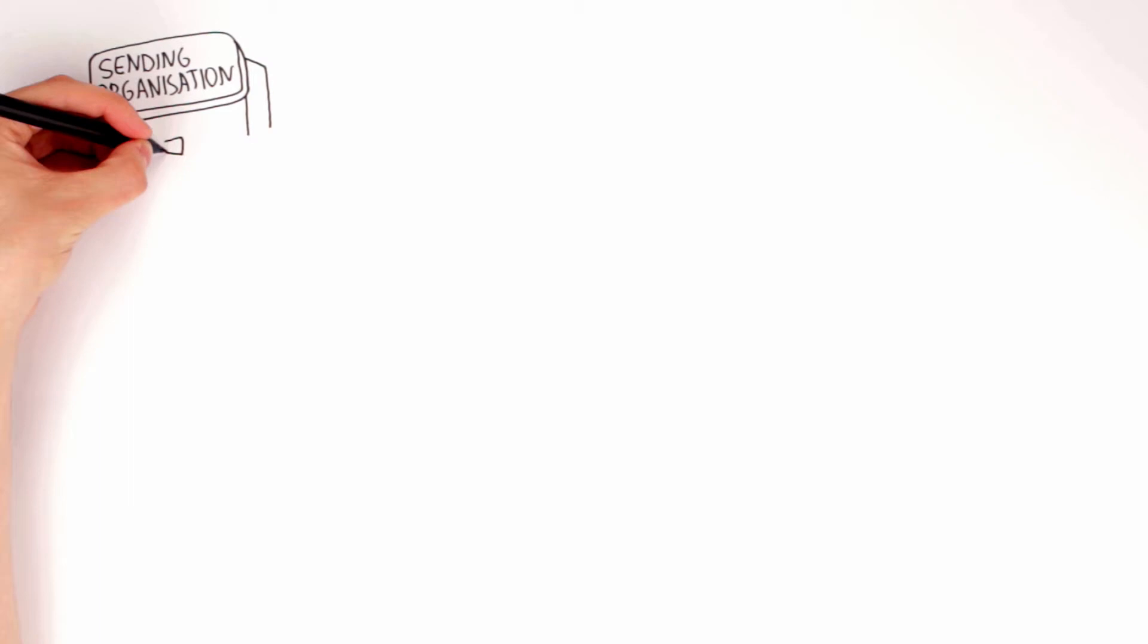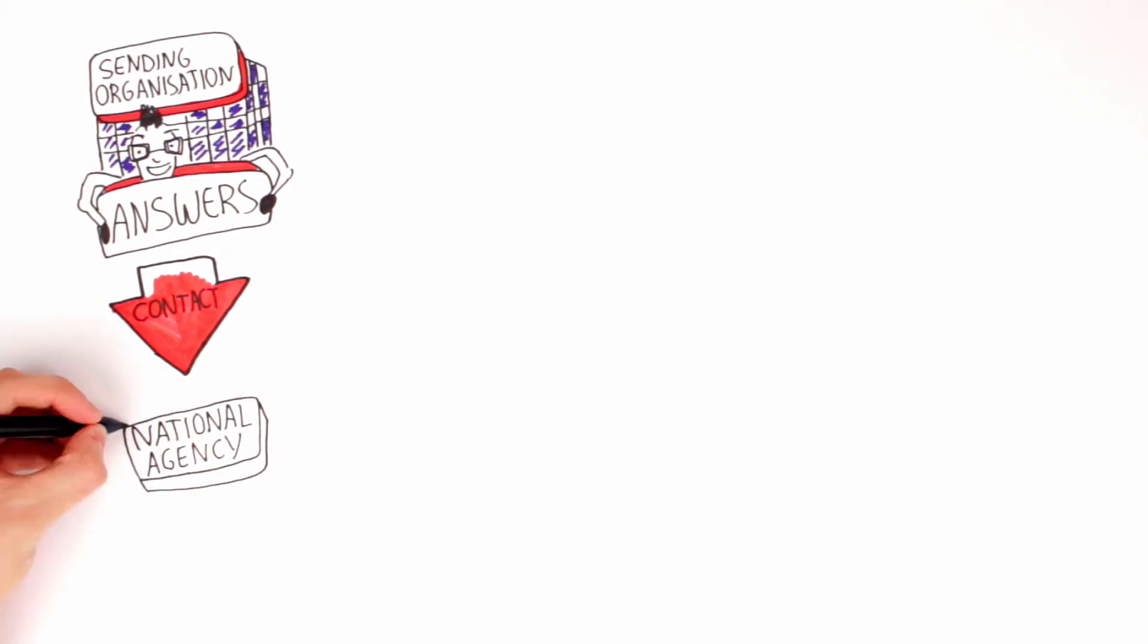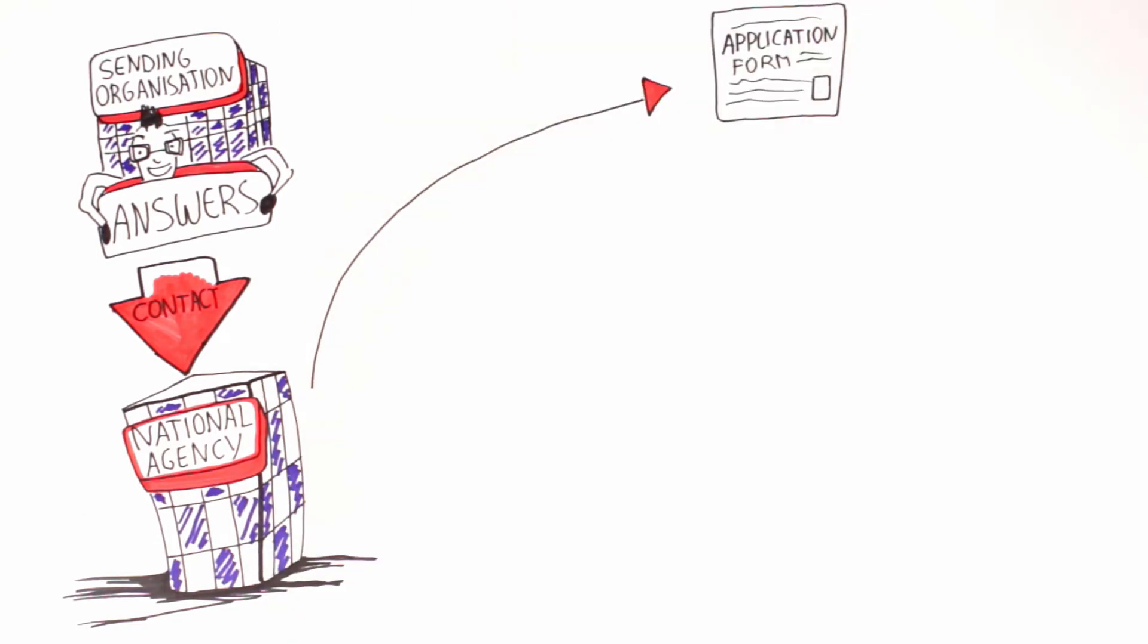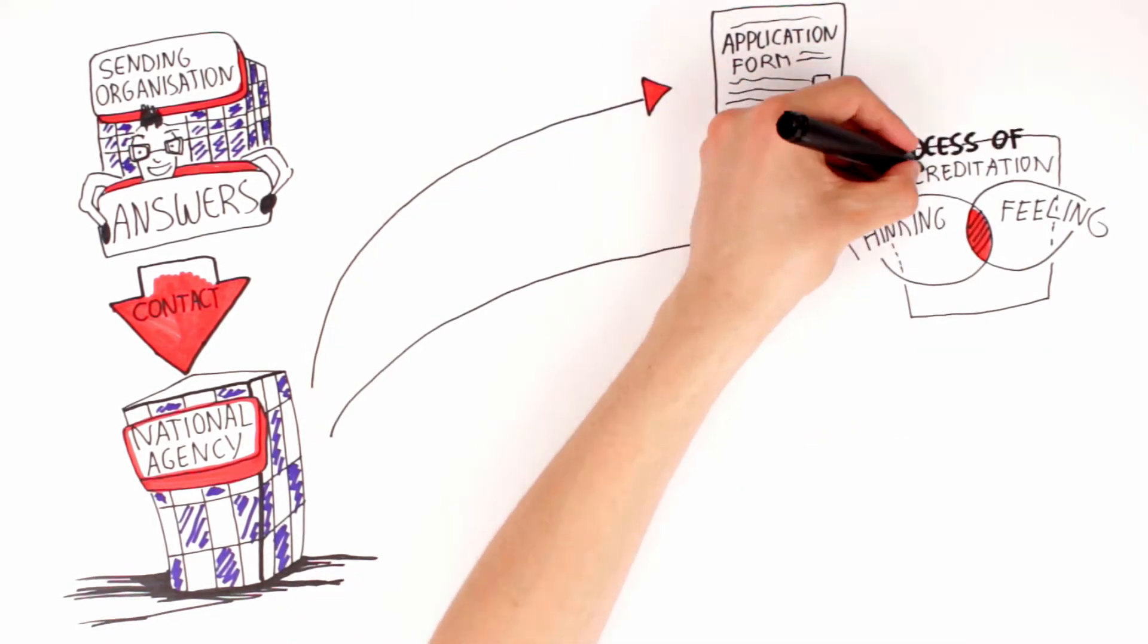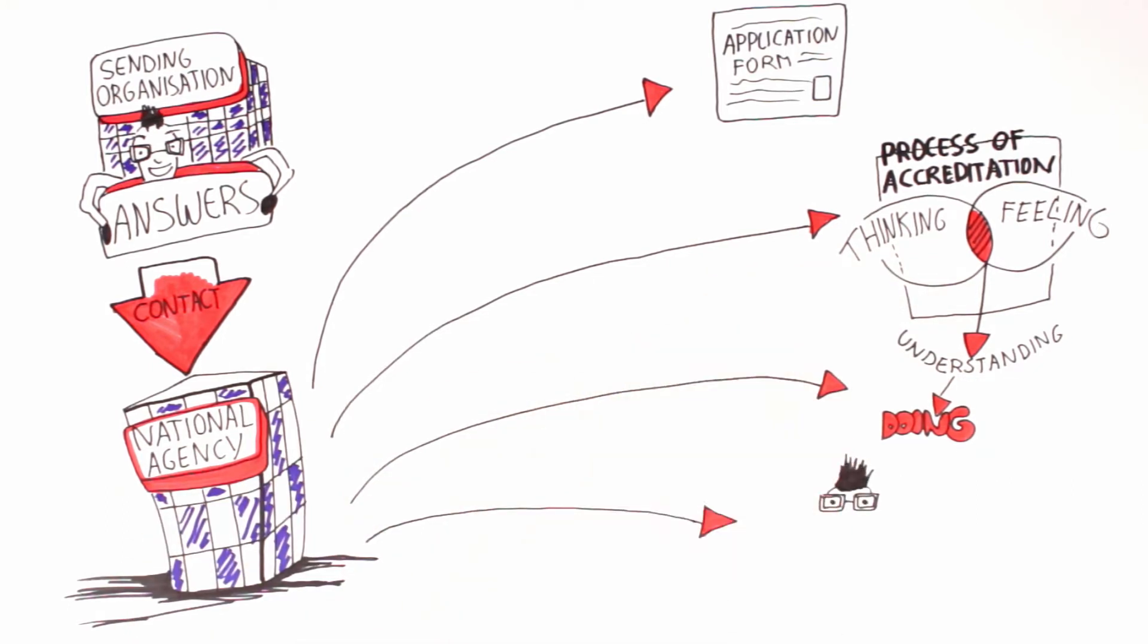Once you have answers to these questions and still feel it's the right thing for your organization, you need to contact your national agency. They will assist or guide you through the next steps which are filling in the application form, understanding the process of accreditation, doing the accreditation, giving a positive answer or helping you improve it. You're good to go.